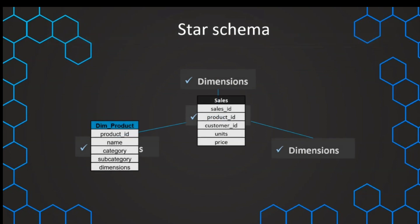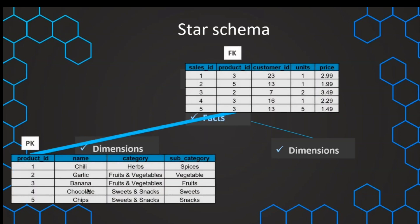We arrange and structure our data in facts and dimensions. In our case, looking at this example, we have the sales table which contains all of our important facts. And we can create relationships using the foreign key and the primary key to create those connections or joins to our dimension tables, in our case the product table. So we have our fact table with our foreign key that enables a relationship or a join to a primary key of our dimension table.